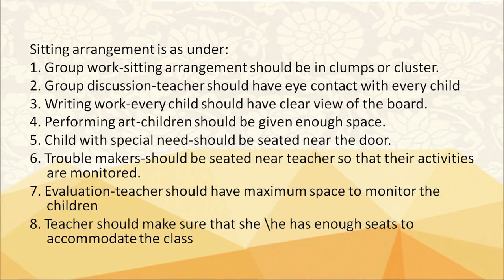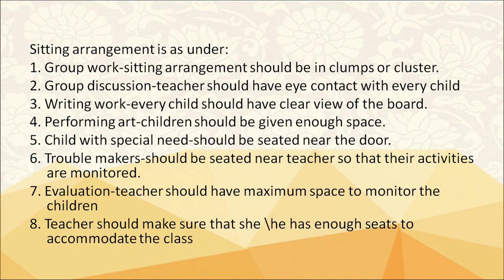Seating arrangements include: group work — seats should be in clumps or clusters; group discussion — teacher should have eye contact with every child; writing work — every child should have a clear view of the board; performing arts — children should be given enough space; children with special needs — they should be seated near the door; troublemakers — they should be seated near the teacher so their activities are monitored well; evaluation — teacher should have maximum space to monitor children; and teacher should ensure there are enough seats to accommodate the class.